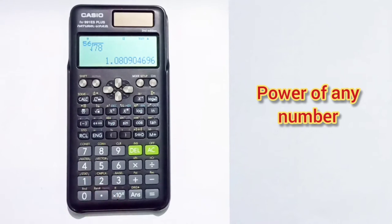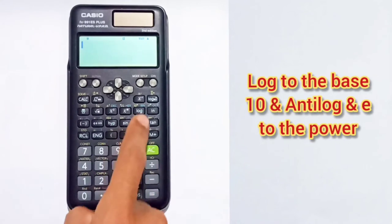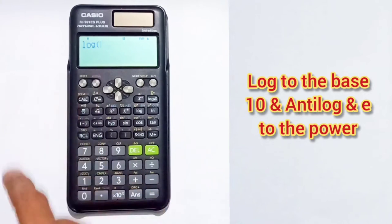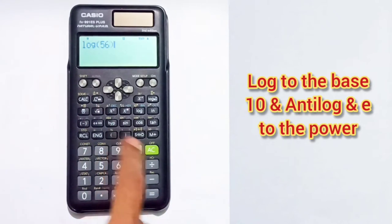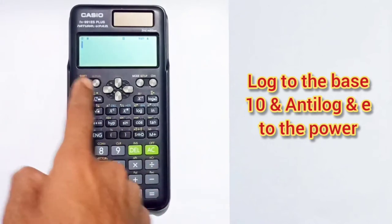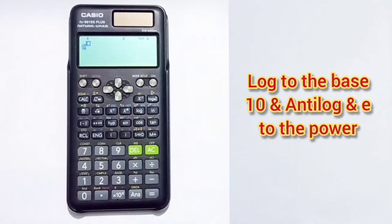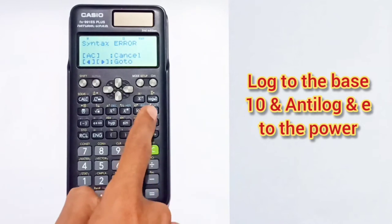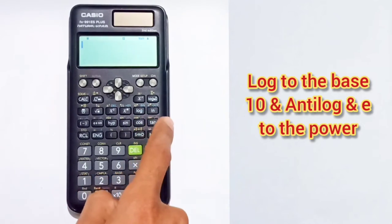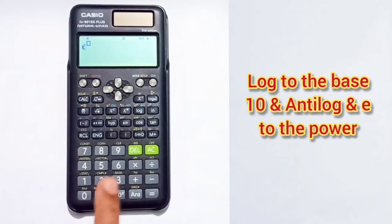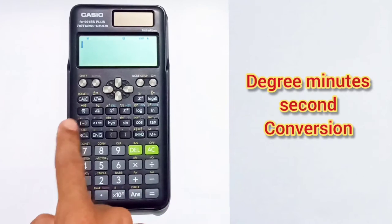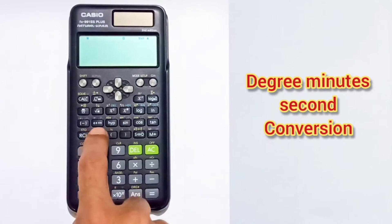To find log base 10 of a number, press the log button then enter the number. For the antilog, press Shift plus log. For the natural log (ln), press the ln button. And to get e to the power of any number, press Shift plus the ln button.